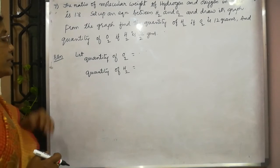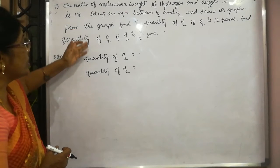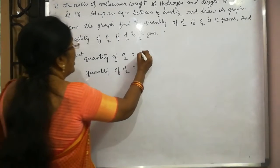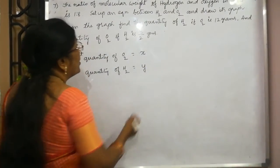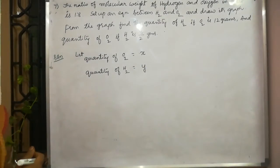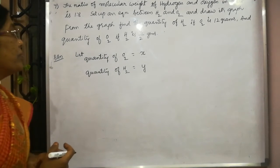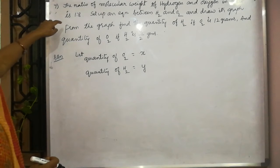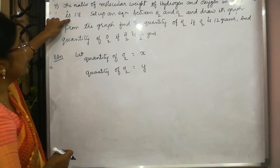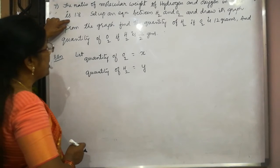Now, let us solve this. Let the quantity of oxygen is x and quantity of hydrogen is y. Now, we have to set up the equation between this hydrogen and oxygen. Now, he has given the ratio of the hydrogen and oxygen. Ratio of hydrogen and oxygen is 1 is to 8.